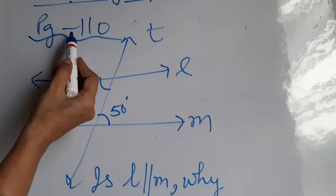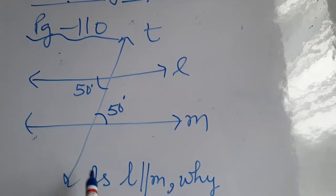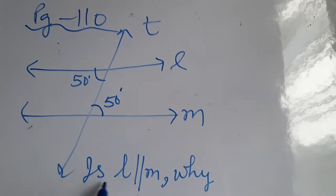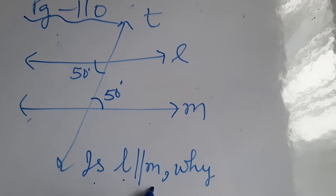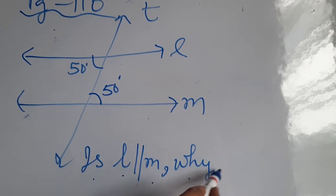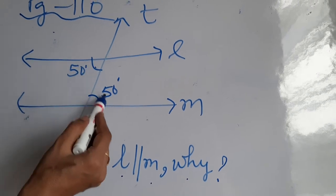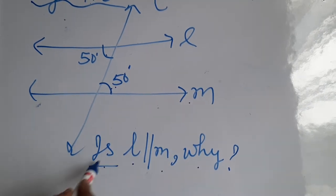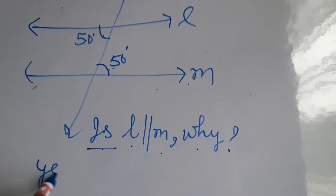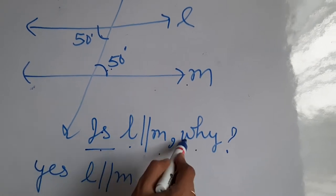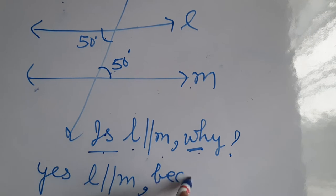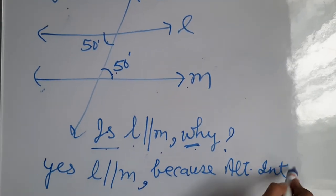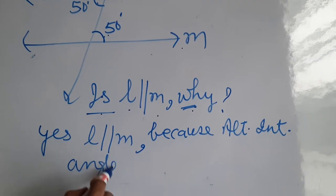Now see page 110. A figure is given with the question: is line L parallel to M? The alternate interior angles in the figure are equal, so lines are parallel. The answer is yes — L is parallel to M — and the reason is that alternate interior angles are equal.